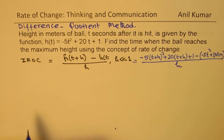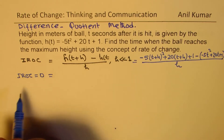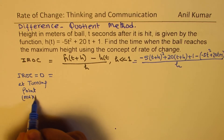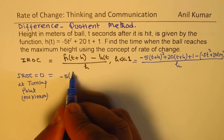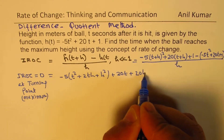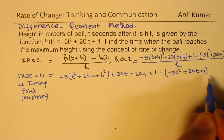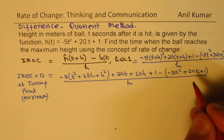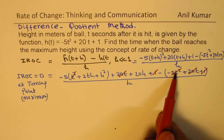It is important to write the brackets clearly. Let's expand and simplify. The instantaneous rate of change equals zero at the turning point. Expanding: minus 5 times (t squared plus 2th plus h squared) plus 20t plus 20h plus 1, minus (minus 5t squared plus 20t plus 1), all divided by h. The three like terms always cancel — if they don't, something has gone wrong.